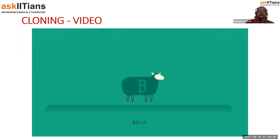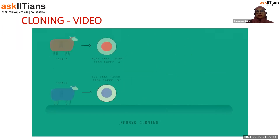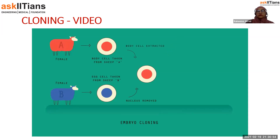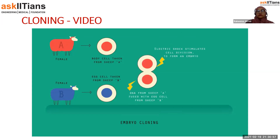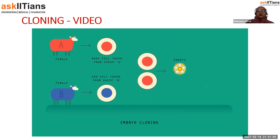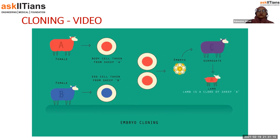Adult cell cloning is used to form a clone of an adult animal. Dolly the sheep was the first mammal cloned, back in 1996. An unfertilized egg cell is taken from an adult female and its nucleus is removed. A body cell — such as a skin cell — is taken from a different adult; its nucleus is removed and inserted into the egg cell. An electric shock stimulates the egg to divide and form an embryo. These embryo cells contain the same genetic information as the adult body cell, and when developed into a ball of cells, the embryo is inserted into a surrogate female's womb.